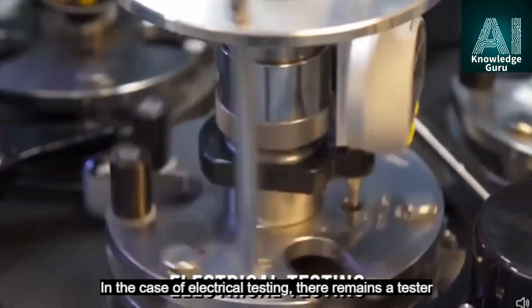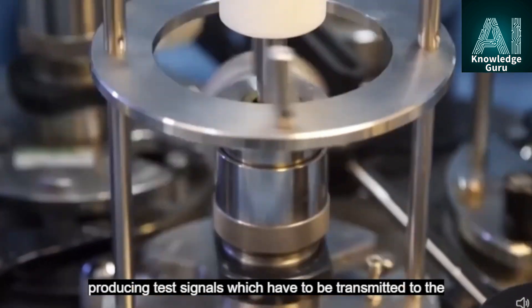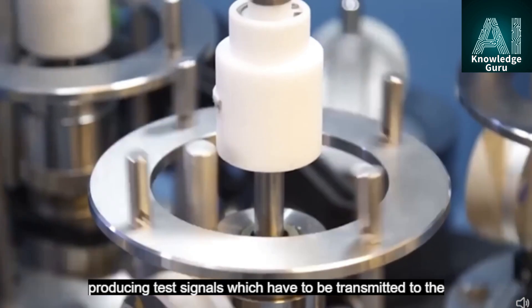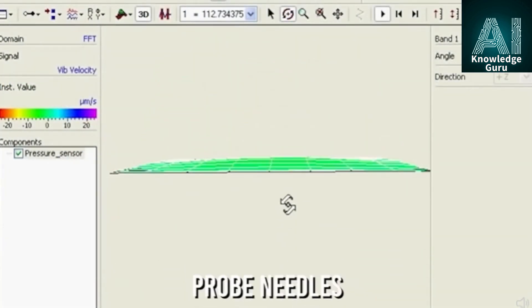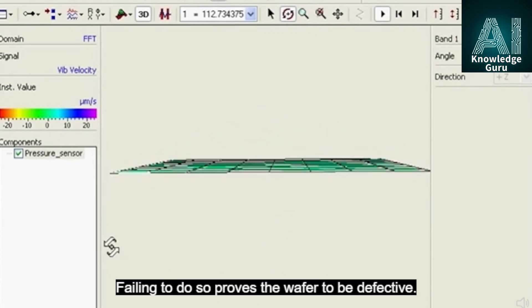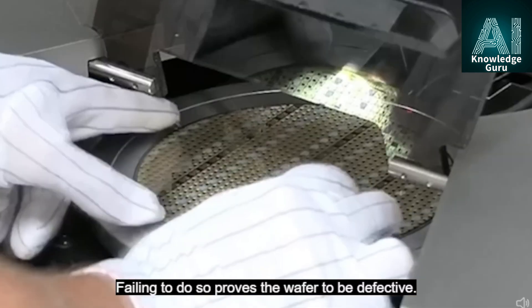In the case of electrical testing, there remains a tester producing test signals which have to be transmitted to the wafer. The transmission is done with the help of an instrument called probe needles. The wafer is then supposed to return the signal sent to it. Failing to do so proves the wafer to be defective.